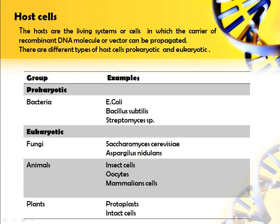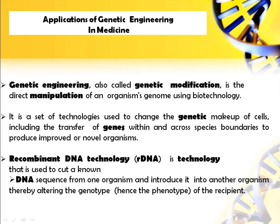Different types of host cells: hosts are living systems or cells in which the carrier recombinant DNA molecule or vector can be propagated. There are prokaryotic and eukaryotic host cells. Prokaryotic examples include E. coli, Bacillus subtilis, and Streptomyces. Eukaryotic hosts include fungal species such as Saccharomyces cerevisiae and Aspergillus nidulans, as well as animal cells like insect and mammalian cells, and plant cells such as protoplasts and intact cells.